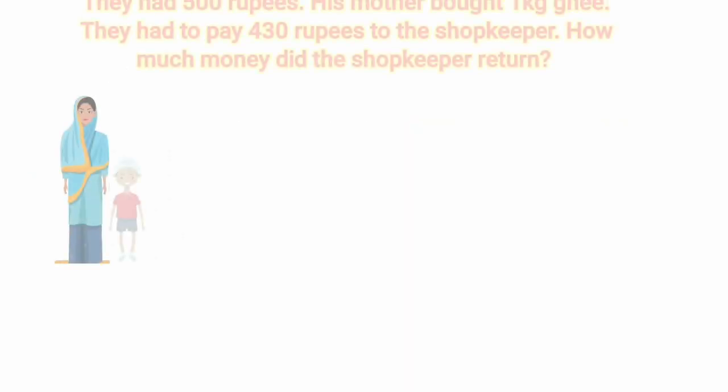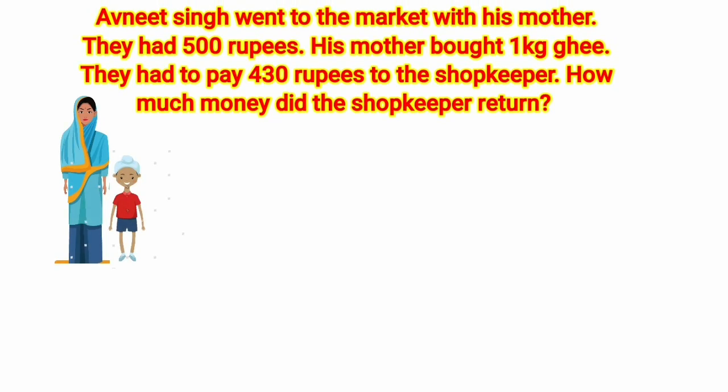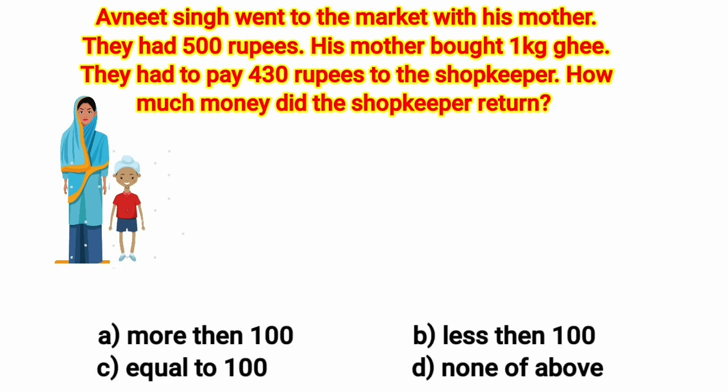Avneet Singh went to the market with his mother. They had rupees 500. His mother bought 1 kilogram ghee and they had to pay rupees 430 to the shopkeeper. How much money did the shopkeeper return? Here we have 4 options and we have to take the right option.